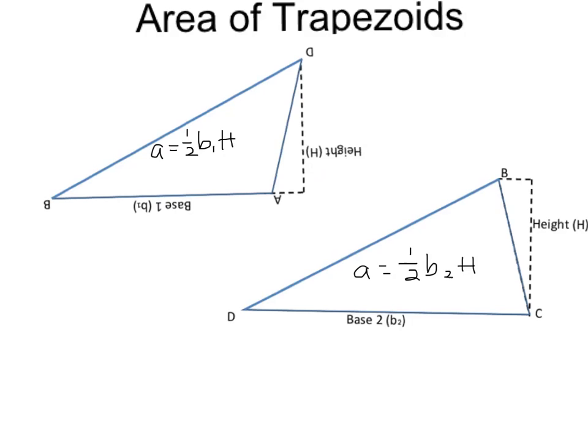So the area of each one of my triangles, for this first triangle, it's the area equals one-half base one times the height. And for the second triangle, it's one-half base two times the height. And remember, the height is the same.